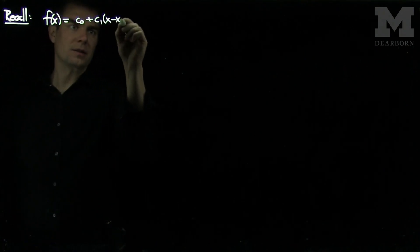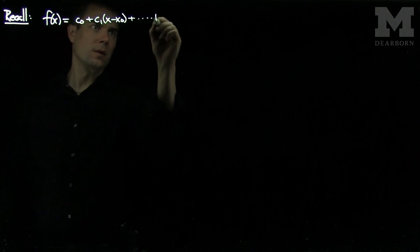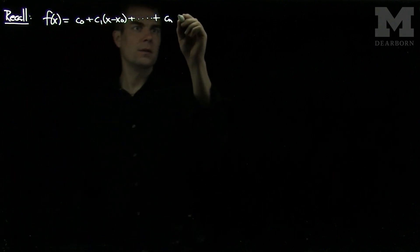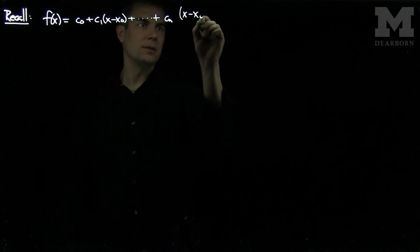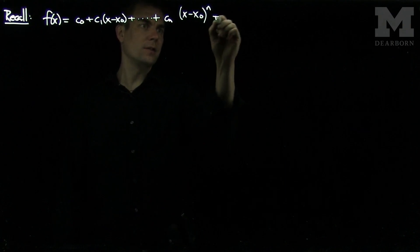Let's recall that the McLaren expansion tells us that f(x) equals C0 plus C1 times (x minus x0) plus Cn times (x minus x0) to the n. This series goes on forever.